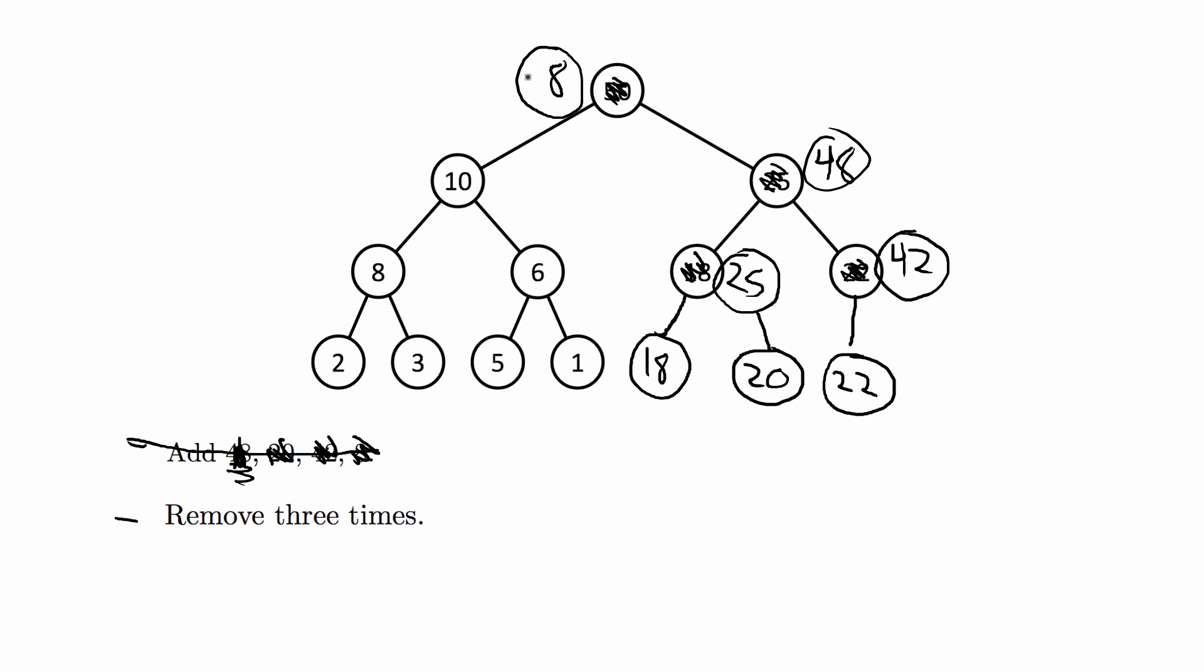To push down, what you want to do is you want to compare the parent to its two children and you want for max heaps to switch with the larger value, so the bigger child.